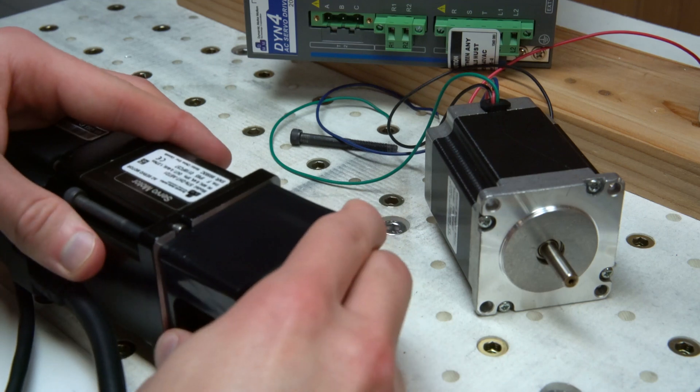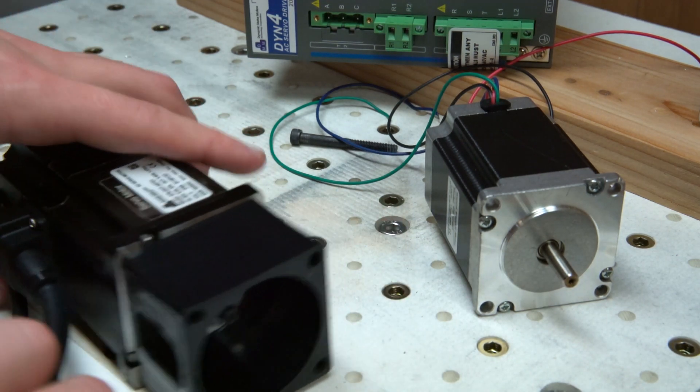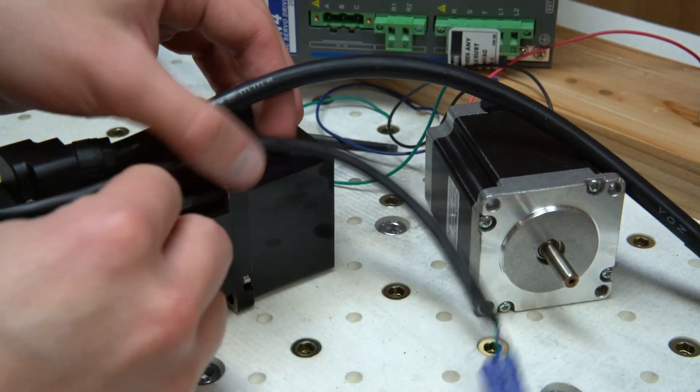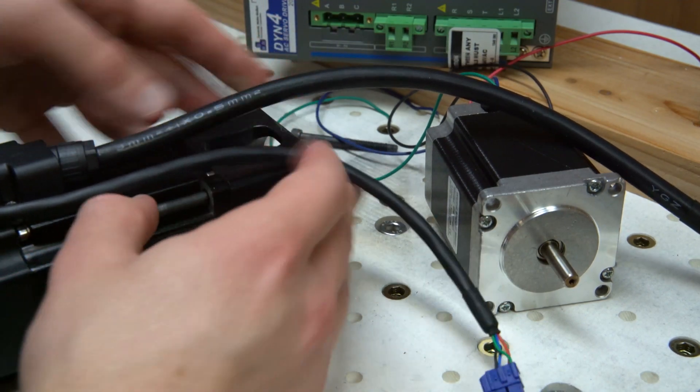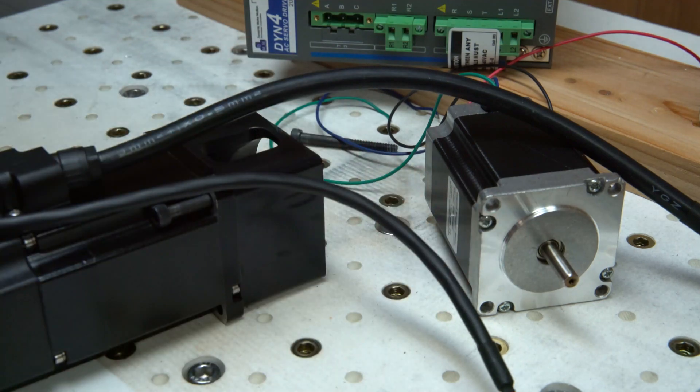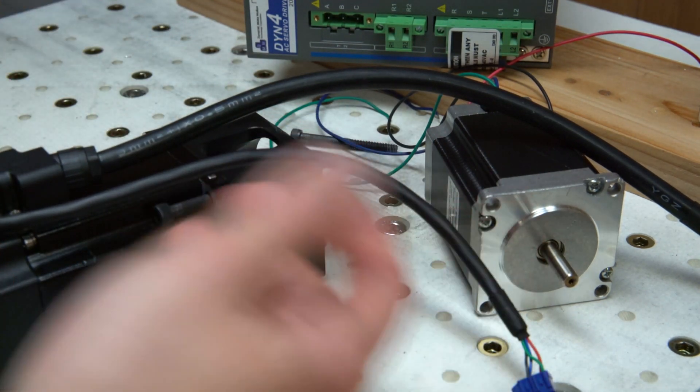When I contacted DMM about this, they told me that other people have encountered this issue as well. They suggested modifying the spacing, basically drilling out the holes on my machine to try to accommodate the wider mounting circumference, larger than it should be for NEMA 23.